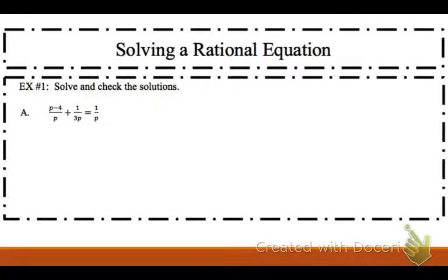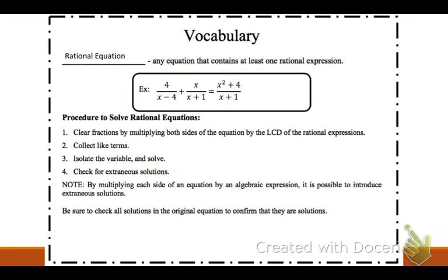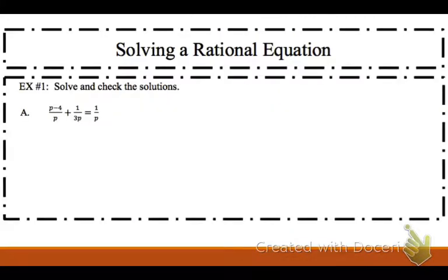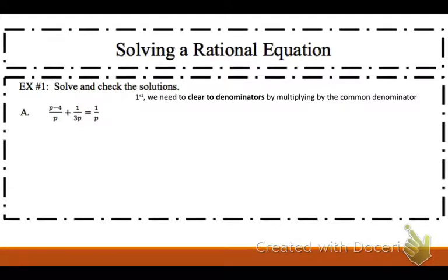Those are the steps to solving them, so you can look at those if you want. We need to solve this and check our solutions. The first thing we're going to do is clear the denominator. You clear the denominator by finding the common denominator and multiplying by that.